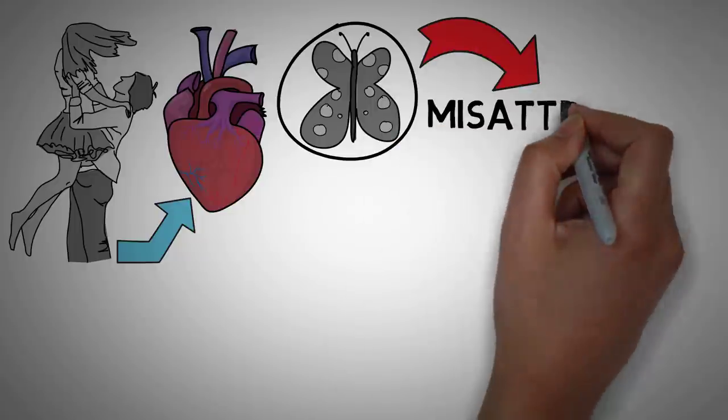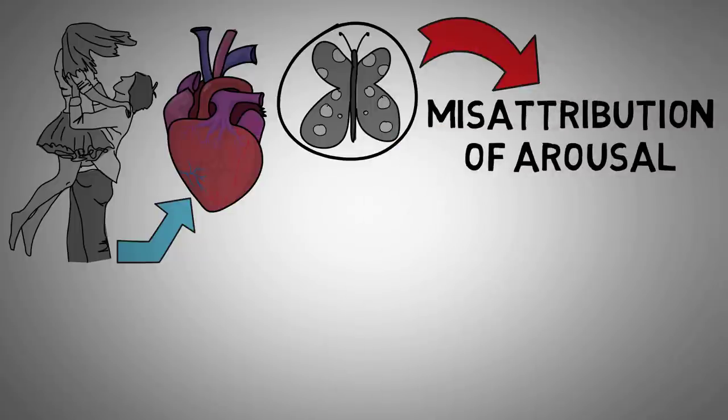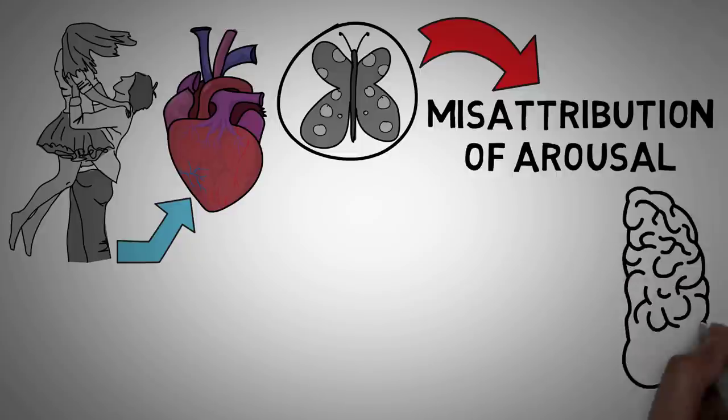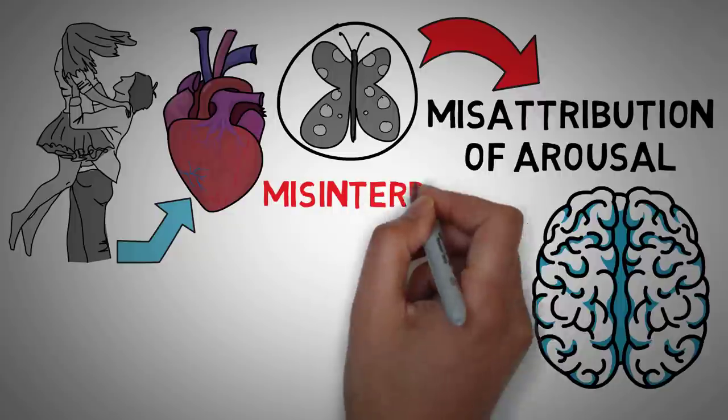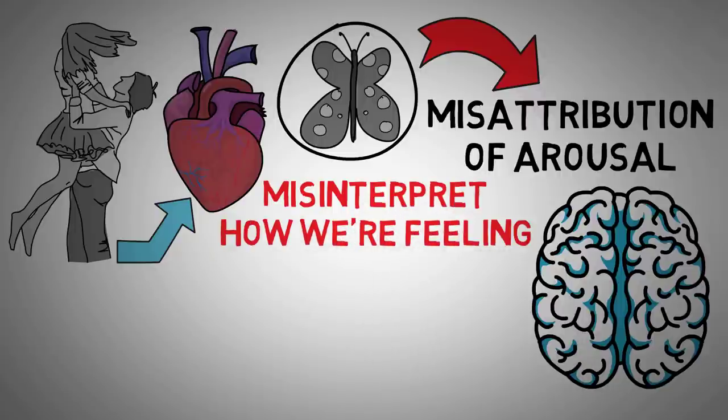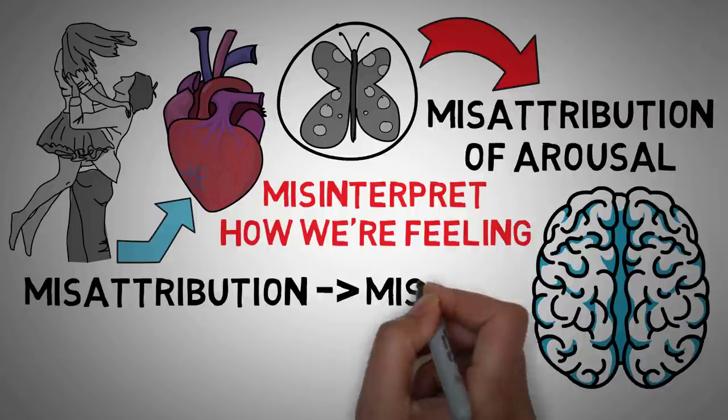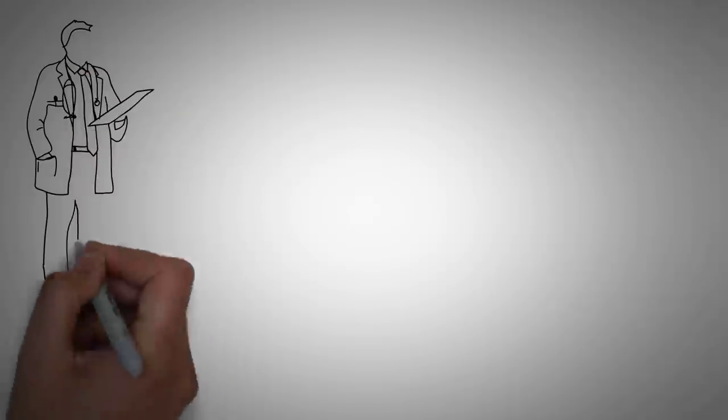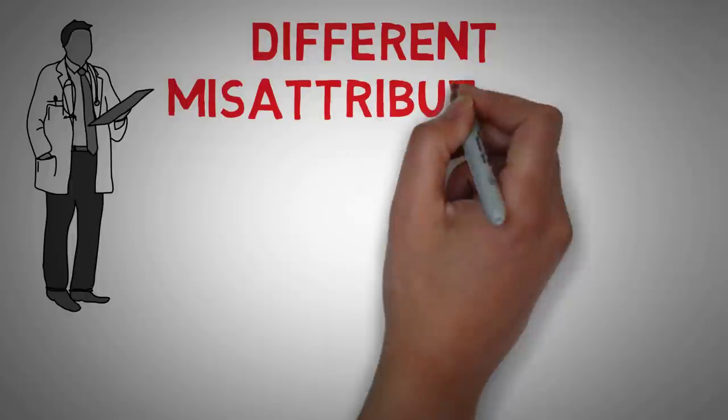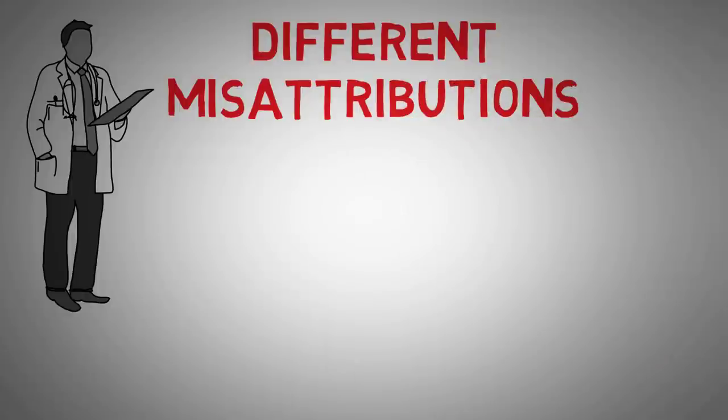This is called the misattribution of arousal, and it's pretty fascinating. It's one of the many ways that our brains might get its wires crossed and make a mistake about how we're feeling. So first off, what is misattribution? There are actually a ton of different ways that our brains misattribute information. Misattribute simply means to make a mistake. Social psychologists have studied a handful of different misattributions that distort the way that we see the world or remember things.